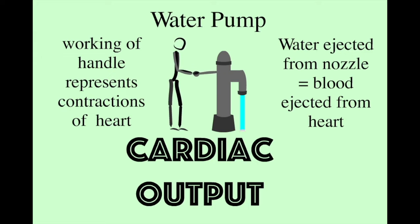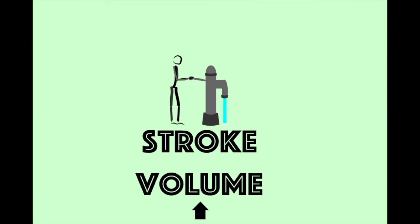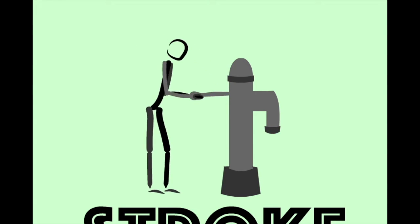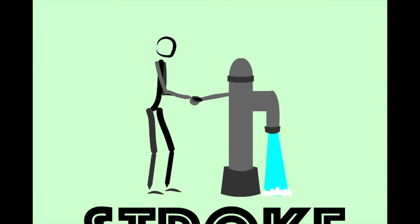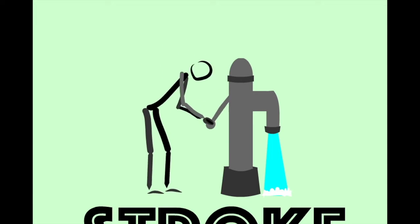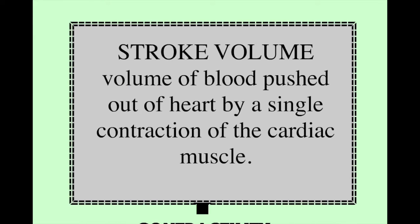If we want to increase the flow of water from the pump — i.e. cardiac output — then there are two main things we can do. The first is to increase the volume of water being pushed out with each push of the handle. As we can see, if our stick figure puts a bit more effort in, then a greater volume of water is ejected. The heart works in a similar way; the volume of blood ejected from the heart with each contraction of the muscle is referred to as stroke volume.